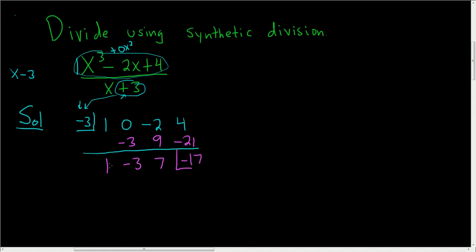So to recap, you write the 1 down. 1 times 3, that's negative 3. Add, you get negative 3. Negative 3 times negative 3, that's 9. Add, you get 7. 7 times negative 3 is negative 21. Add, you get negative 17. The final answer is written as follows.